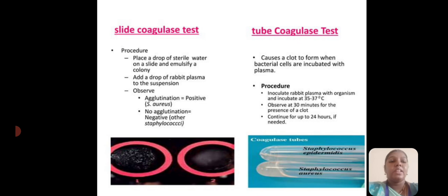The coagulase test has two methods: slide coagulase and tube coagulase. For the slide coagulase procedure, place a drop of sterile water on a slide and emulsify a colony. Then add a drop of rabbit plasma. If the suspension shows agglutination, it is positive for Staphylococcus aureus. No agglutination indicates a negative result.